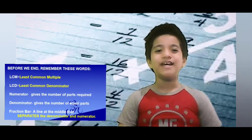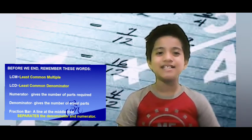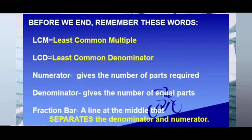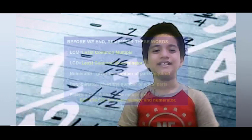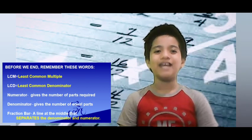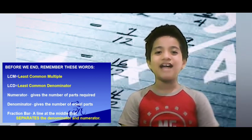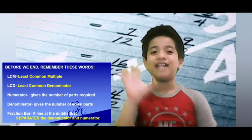Before we end, remember these terms: LCM stands for least common multiple. LCD stands for least common denominator — it gives the number of equal parts required. The fraction bar is the line in the middle that separates the numerator and denominator. Hope you will use these simple methods in your future mathematical activities. Thank you for listening!